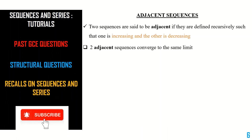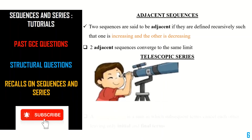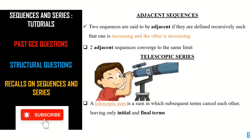A key property of adjacent sequences: two adjacent sequences always converge to the same limit — a very important point. Next, the telescopic series: a telescopic sum is a sum in which subsequent terms cancel each other, leaving just the initial and final terms. We will not emphasize this further in this video, but in Parts 2, 3, and 4 we will explore the telescopic series in more detail and see how useful it is.